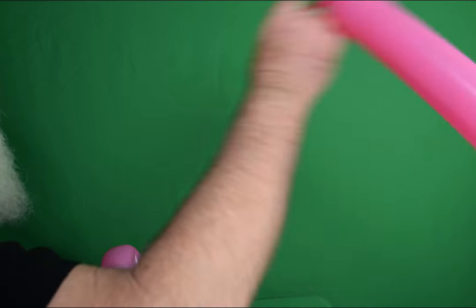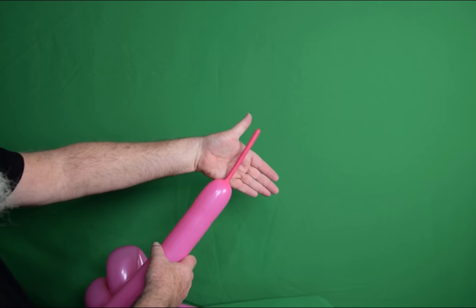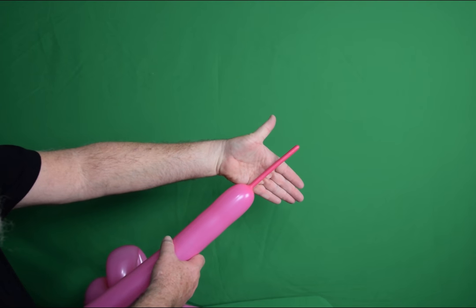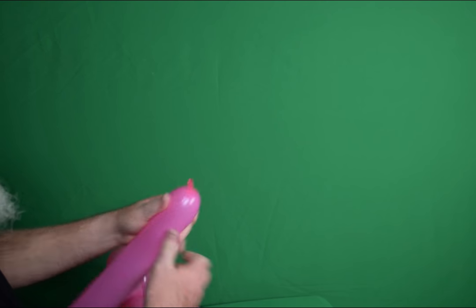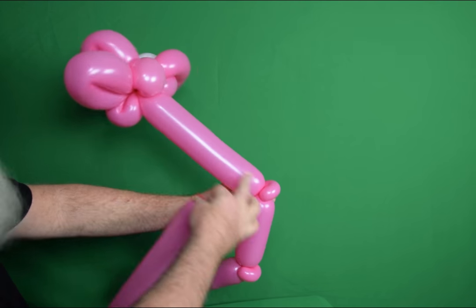Now we've got one more fuchsia 360 left. This one's got about a hand and a half left uninflated on it. It doesn't matter which end you start. I'm going to start with the one closest to the neck, which would be the front of the dinosaur.